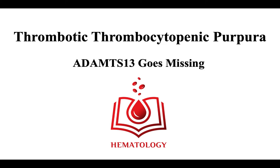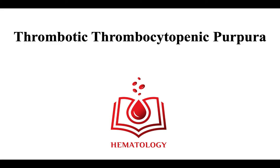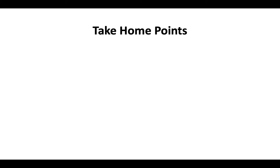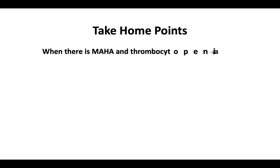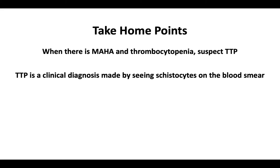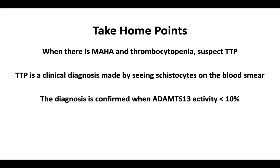Welcome to thrombotic thrombocytopenic purpura, TTP. This video is the second in a three-part series that will review TTP's pathophysiology, diagnosis, and management. In this video, we will cover part two: diagnosis. Over the next few minutes, we will discuss the following take-home points: when there is microangiopathic hemolytic anemia and thrombocytopenia, suspect TTP. TTP is a clinical diagnosis made by seeing schistocytes on the peripheral blood smear, confirmed when ADAMTS13 activity is less than 10%.